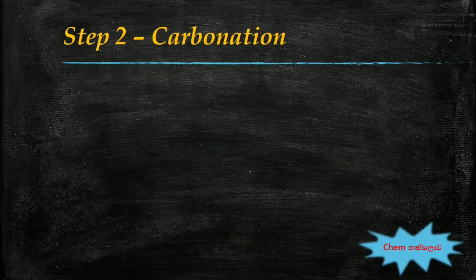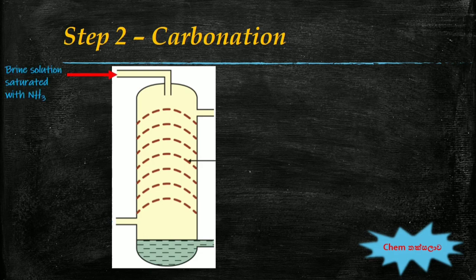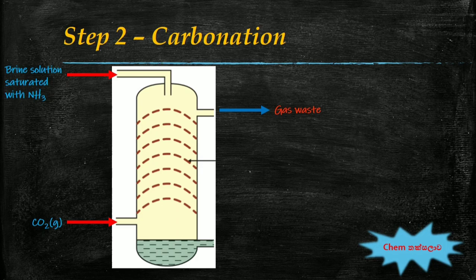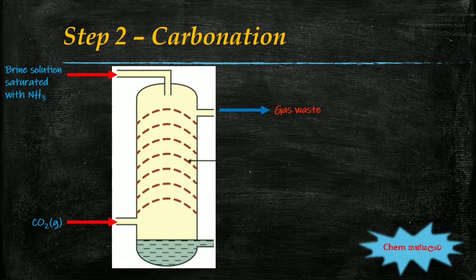The second step is the carbonation of the brine solution from the first step. A carbonation tower is used, and the brine solution saturated with ammonia is introduced from the top while carbon dioxide enters from the bottom. In this step also, reactants are efficiently mixed using the counter-current method. The ammonified brine is a basic medium and carbon dioxide is an acidic gas; dissolving it in water is exothermic. The carbonation tower must also be kept cool throughout the process.